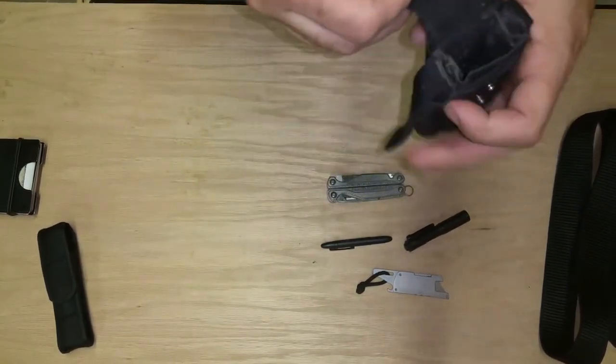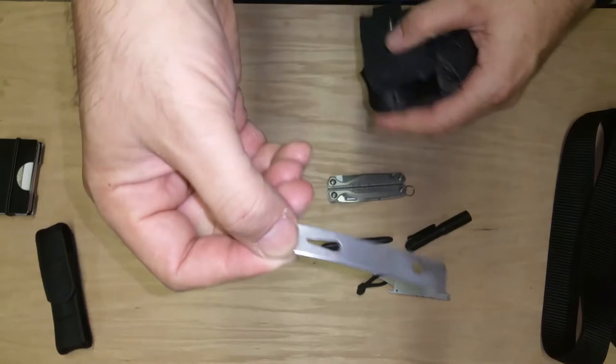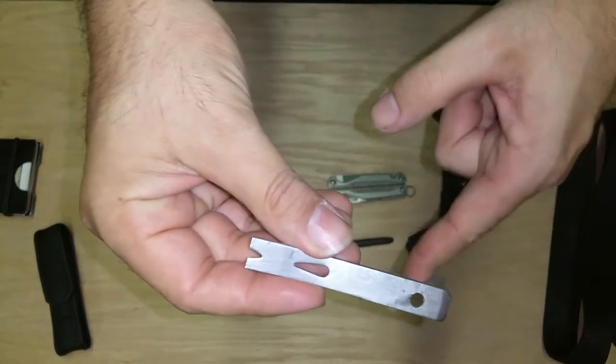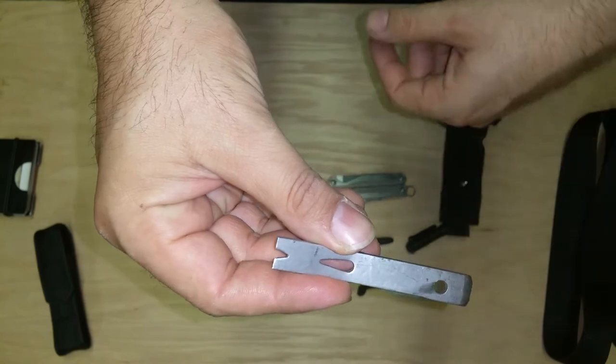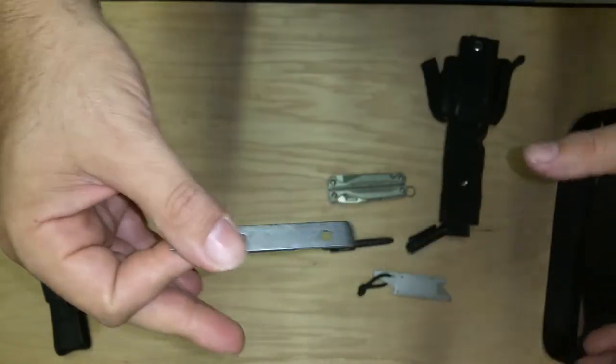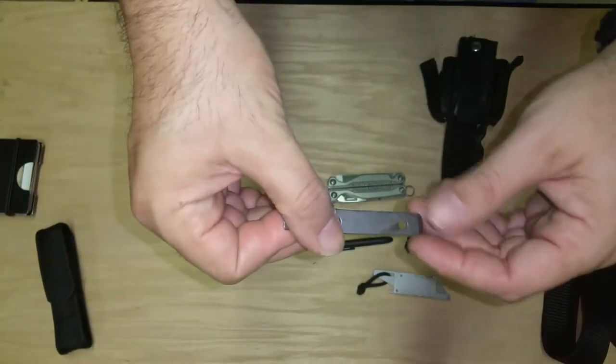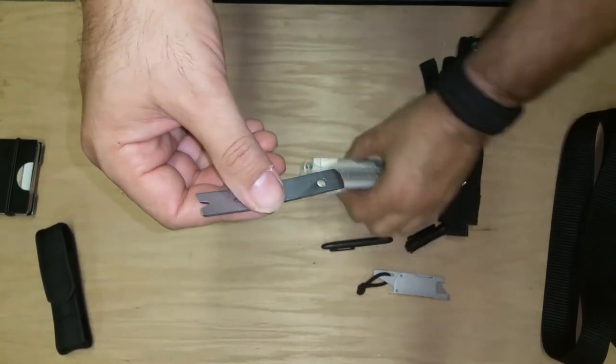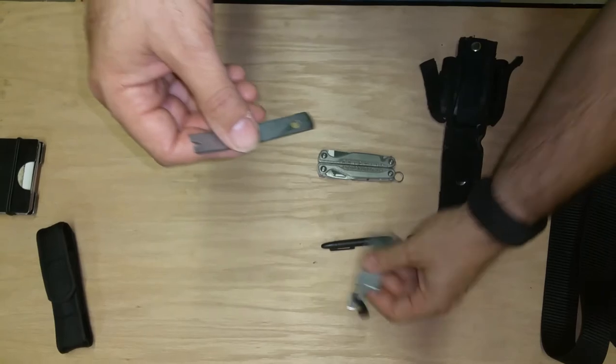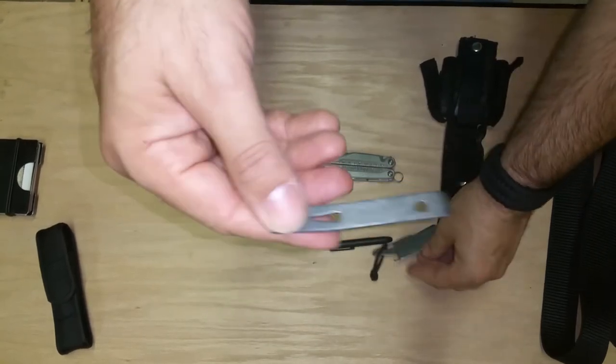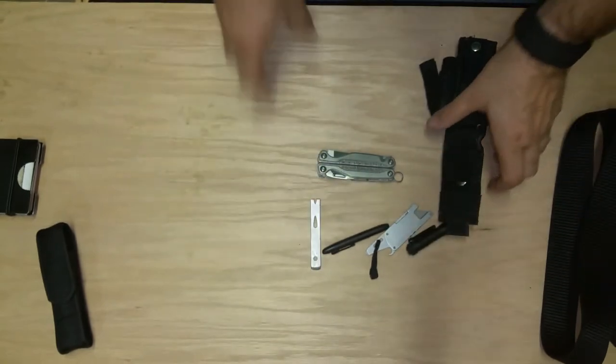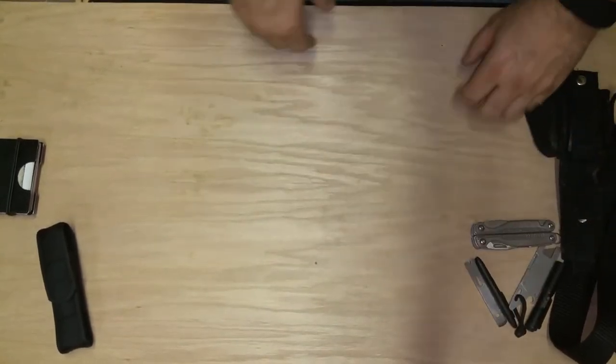And then last but not least, a little pry bar. It's like a five dollar one. I cut the end off it, rounded it off. I get a lot of small boxes at work, pry wooden lids off. And I didn't want to pull this out every time or even use the back of this. But this works well, again five bucks.